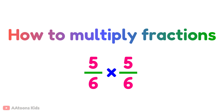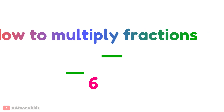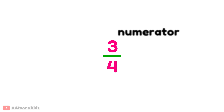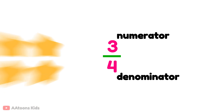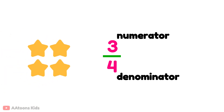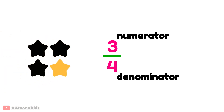Before we start multiplying, let's recall what a fraction is. The number on top is the numerator and the number at the bottom is the denominator. This means we have 3 out of 4 equal parts.